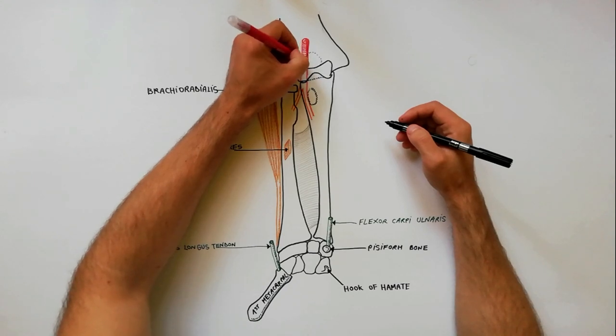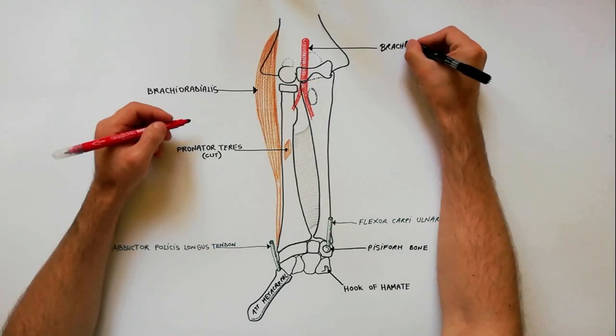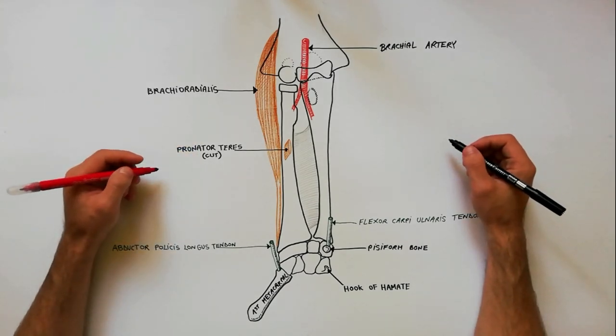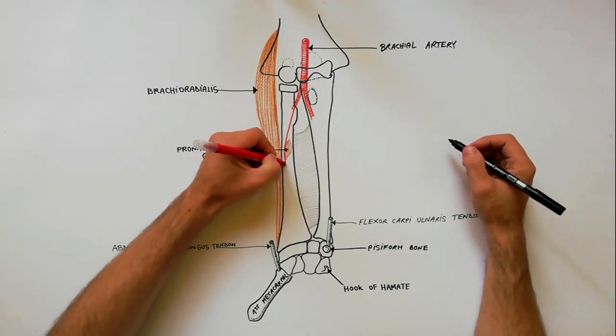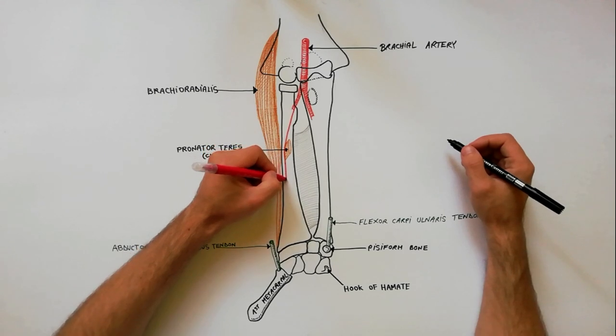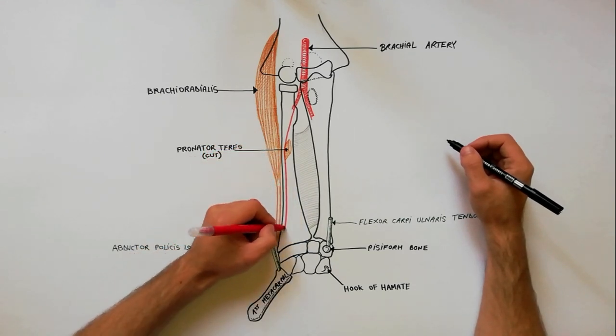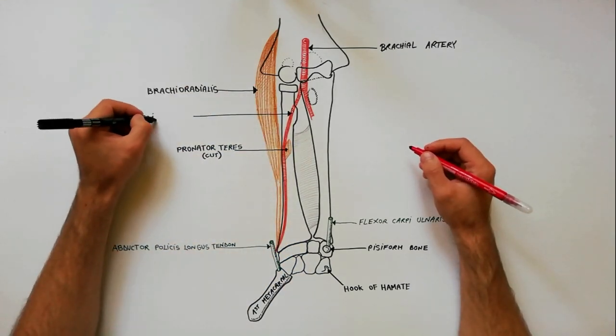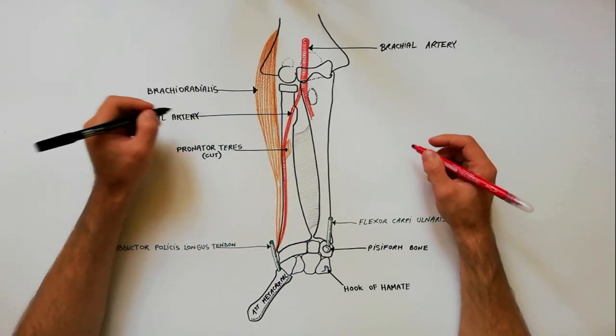At the level of cubital fossa, the brachial artery bifurcates into radial and ulnar arteries. The radial artery descends between the brachioradialis and pronator teres muscles, distally being in close relation with the tendon of brachioradialis.